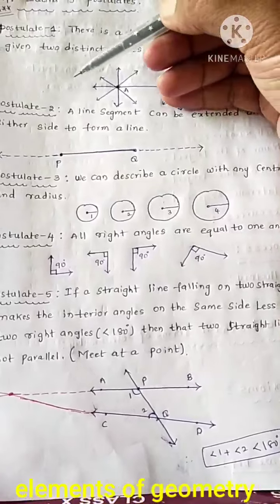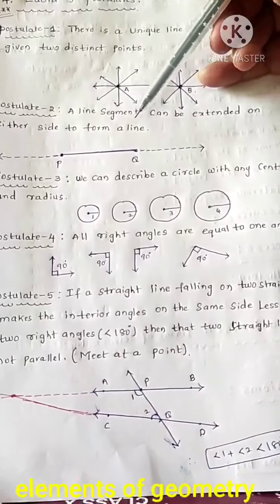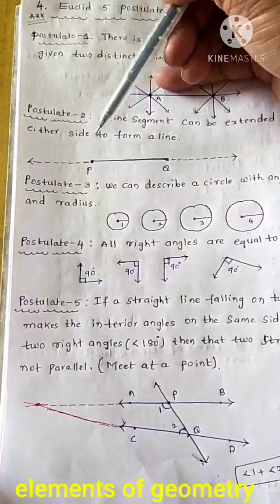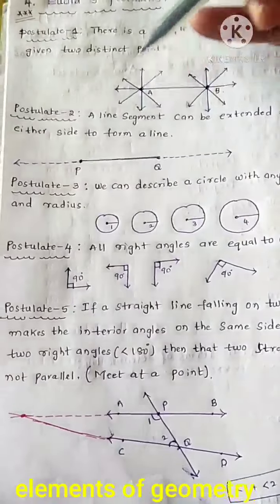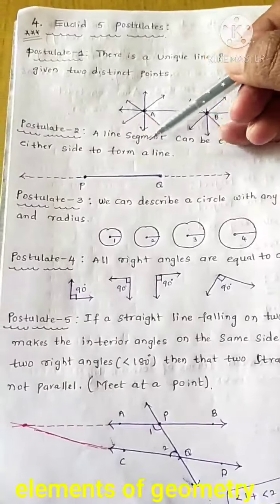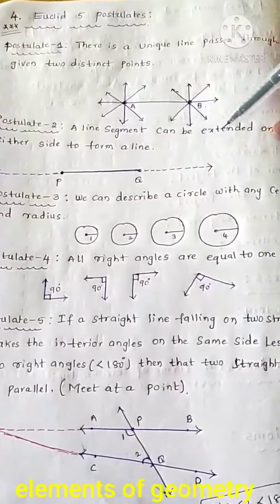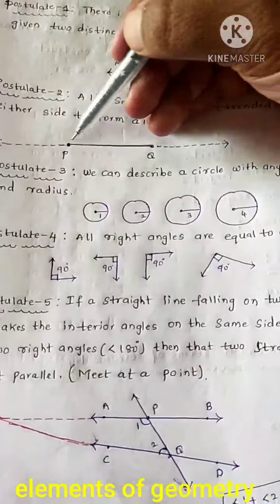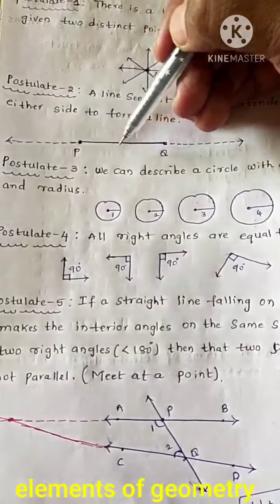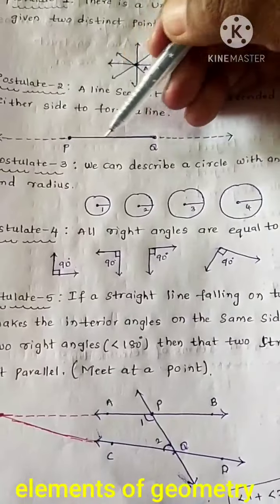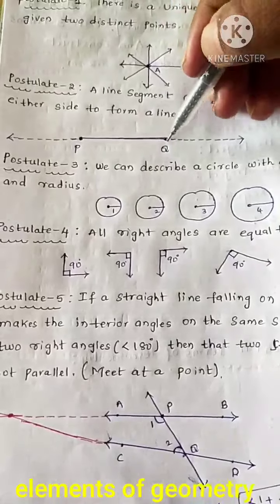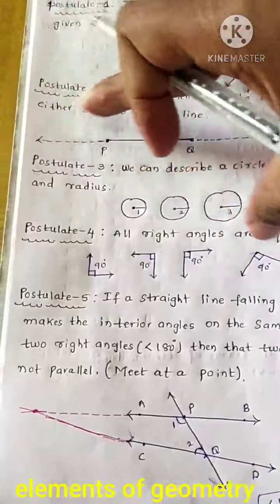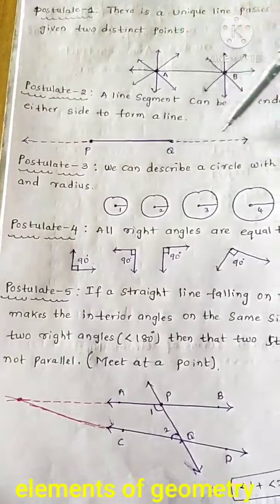Postulate 2: a line segment can be extended on either side to form a line. For example, PQ is a line segment with two end points — extend the Q side and extend the P side indefinitely, and this indicates a straight line.